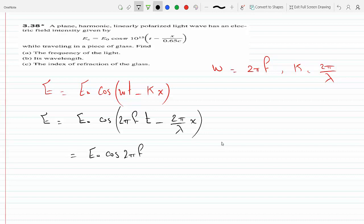So E₀ cosine 2πf, and then I would get t minus, with 2π factored out, so this becomes 1 over f lambda times x.